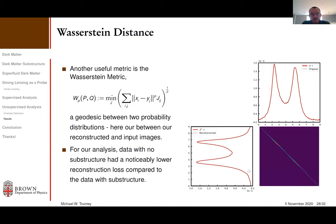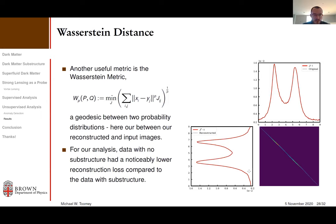An additional metric we use as a check is the Wasserstein distance, which is a geodesic between two probability distributions. We take our two-dimensional image and sum down one axis to compress it to one dimension. One plot shows the original simulated image projected this way, and another shows the corresponding reconstructed data. The idea is to see how close those two distributions are — in this case, the distribution is pixel intensity for our strong lensing image — to make sure everything is consistent with our anomaly detection algorithms.